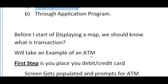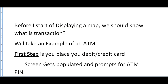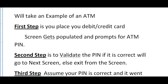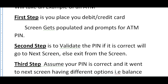Before I tell you how to display a map, we should know one important thing: the difference between a transaction and a task. I'll take an example of an ATM. When we go to an ATM, the first step is we insert our debit or credit card, and it prompts us for a PIN. The second step is it validates the PIN — if correct, it goes to the next screen; else it exits and shows that your PIN is incorrect.